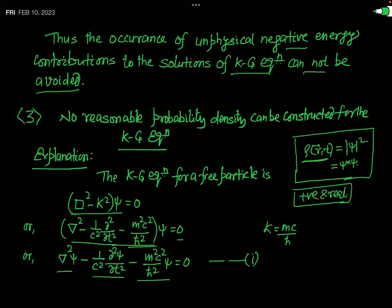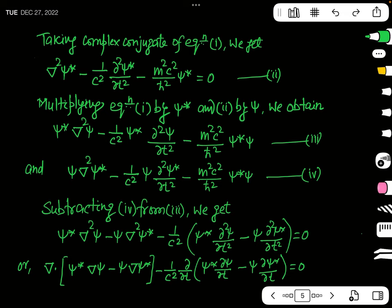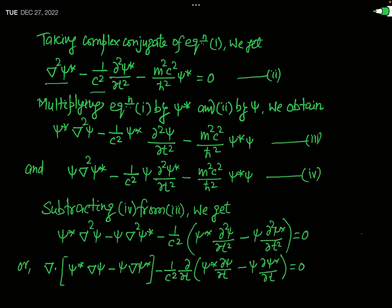First, write the complex conjugate of equation 1. To obtain it, substitute ψ* in place of ψ in each term. The complex conjugate becomes: ∇²ψ* − (1/c²)(∂²ψ*/∂t²) − (m²c²/ℏ²)ψ* = 0. This is equation 2.